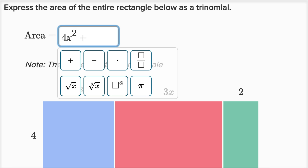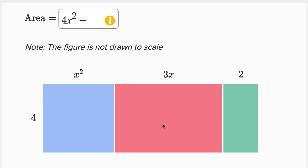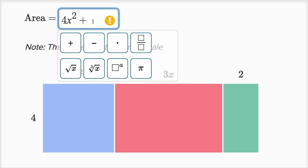And then to that, we wanna add the area of this salmon-colored rectangle. And well, that's gonna be the height four times the width, three x. So we could say four times three x.